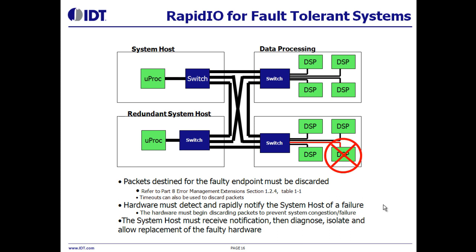RapidIO also has support for fault tolerance. If a RapidIO endpoint fails, or if the link to that endpoint fails, a RapidIO switch can be configured to detect that failure within nanoseconds. It can also be configured to discard packets destined for the failed endpoint, preventing a cascade congestion failure and allowing the system host or secondary host to diagnose and recover from the fault while the rest of the system continues to operate correctly.